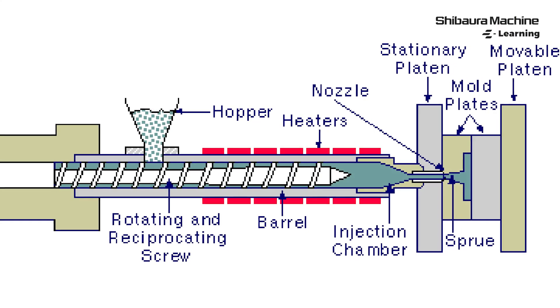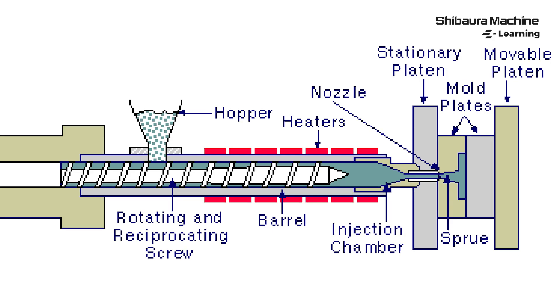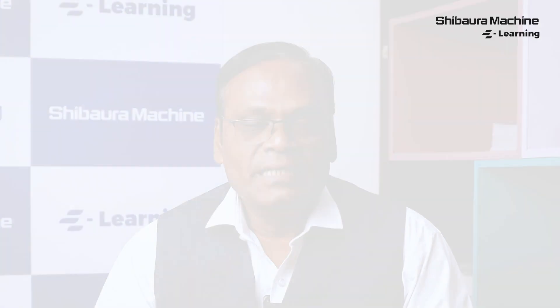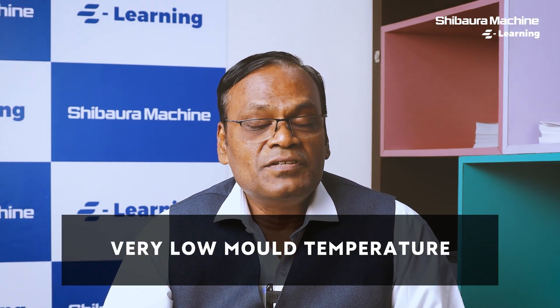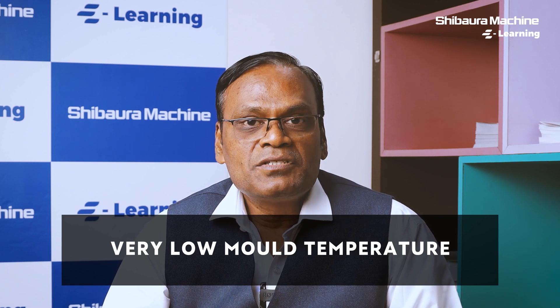The mold plays a vital role in avoiding jetting in a molded part. While designing a mold, due consideration needs to be given to the gating system and runner system, which directly helps avoid jetting. Mold temperature is an important parameter which needs to be controlled for right molding.